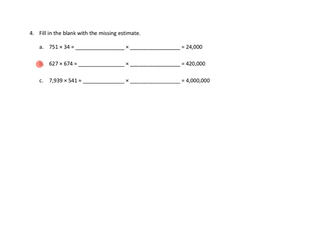Number 4 has different directions. Fill in the blank with the missing estimate. And so, here we'll get an idea of whether we've picked the right factors here. 627. Let's round that to the nearest 100. 627 is only 27 above 600. Much closer to 600 than 700. So, I think that that would be 600.